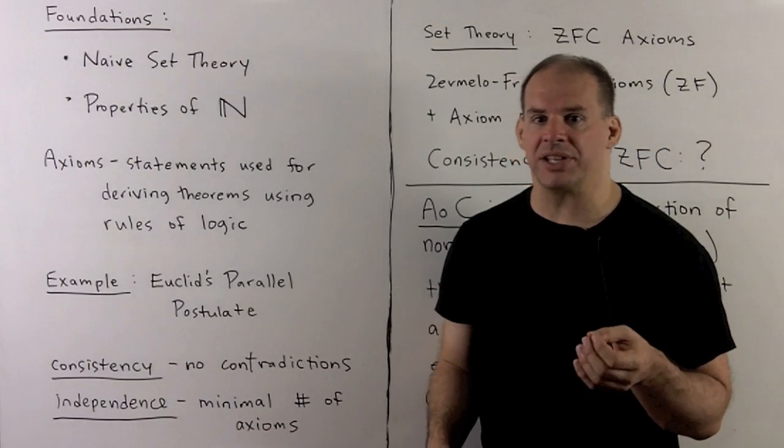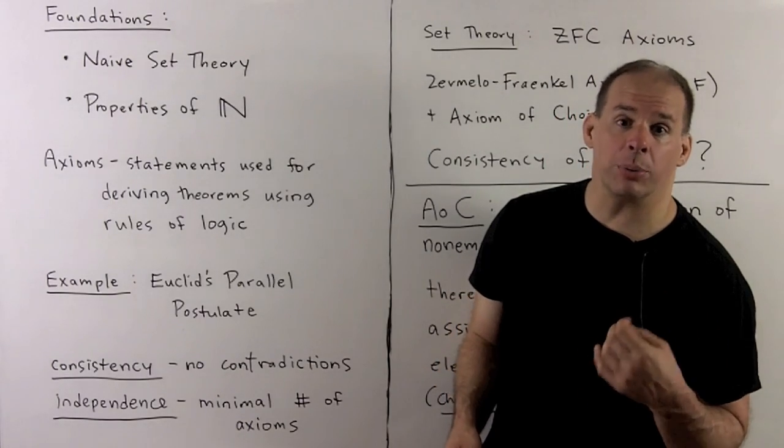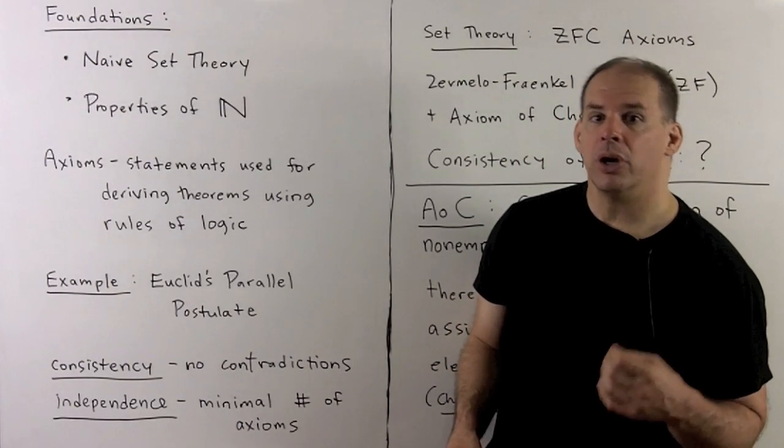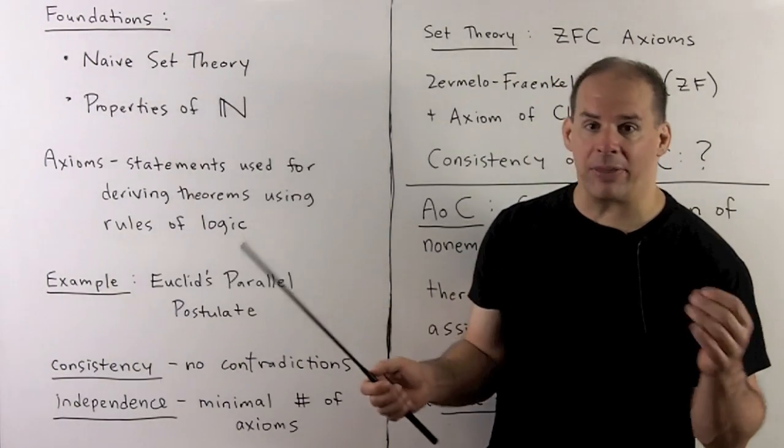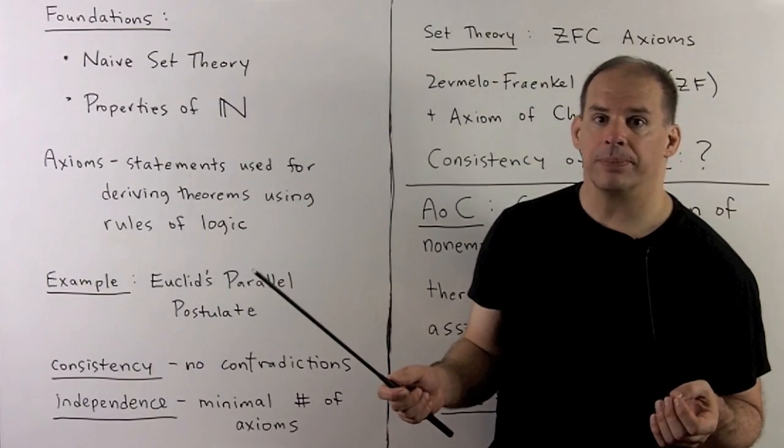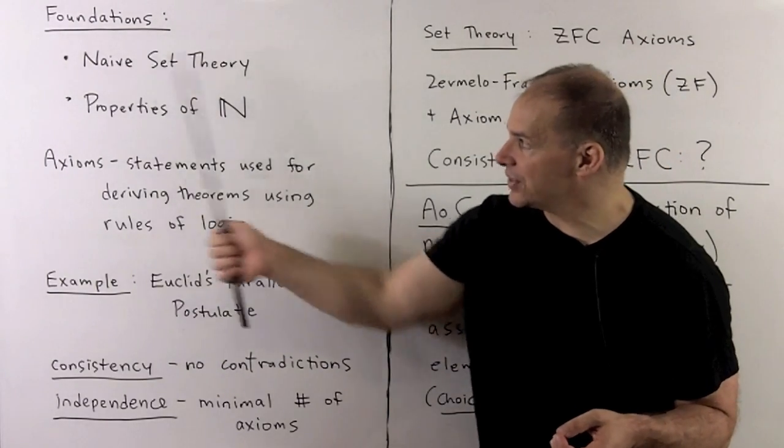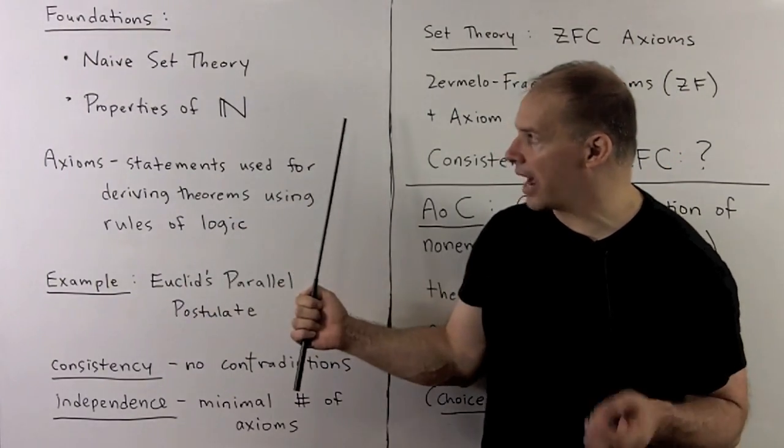Before we can put the real numbers on a rigorous basis, we first need to decide on an appropriate amount of rigor. For us, we'll assume it's in the Math Major's Basics Playlist. That means we'll take as given naive set theory and the basic properties of the natural numbers.